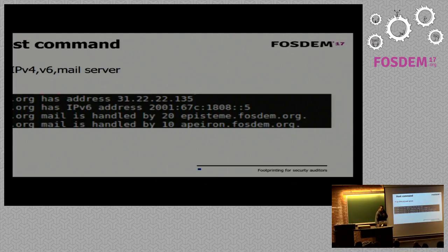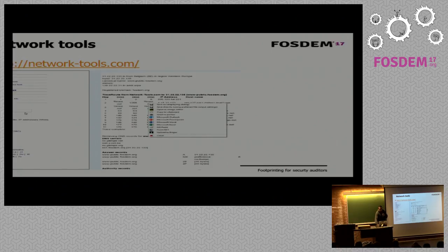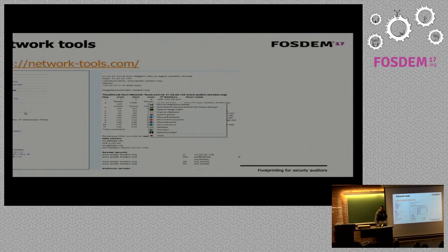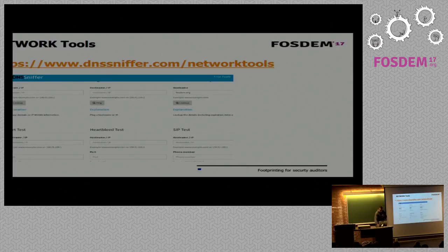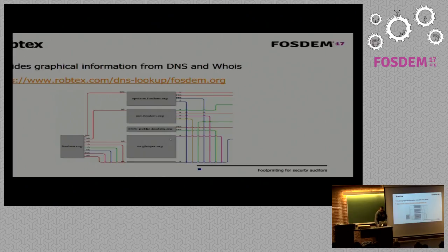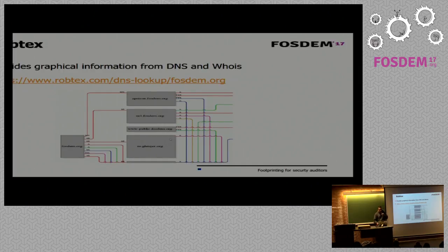We also have the host command, which provides information about the IP address in version 4 and 6, and also provides the mail server of the domain. There are more free online network tools where we can execute commands like ping and traceroute over a specific target or domain. There is also a tool called Robtex, similar to the others, but the difference is that it provides information in a graphical way — we can see the relations between domains and Whois server information.